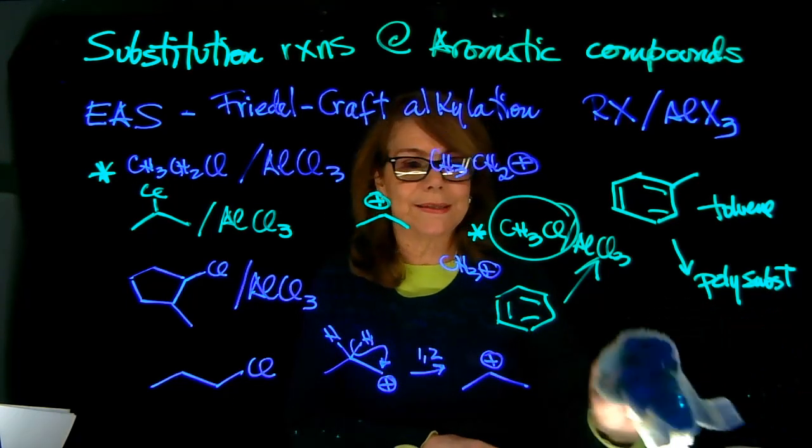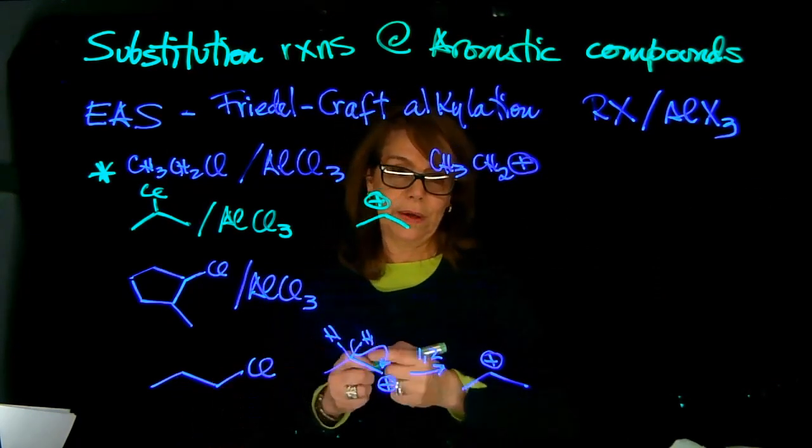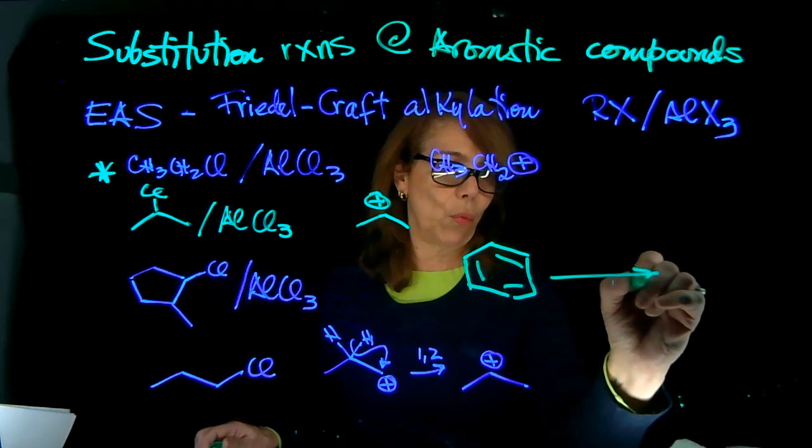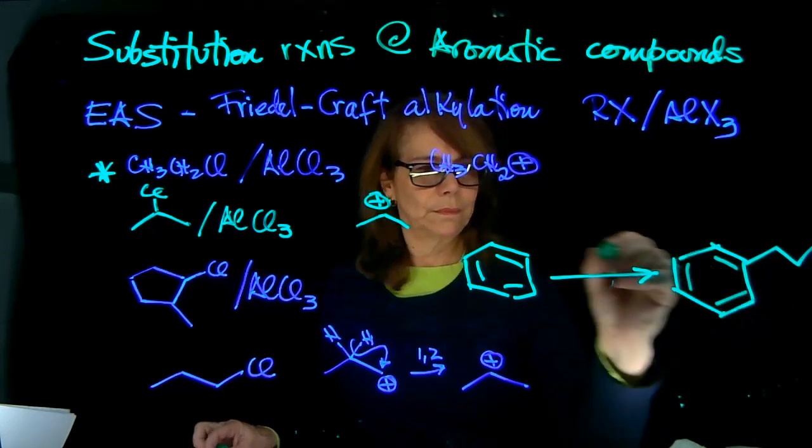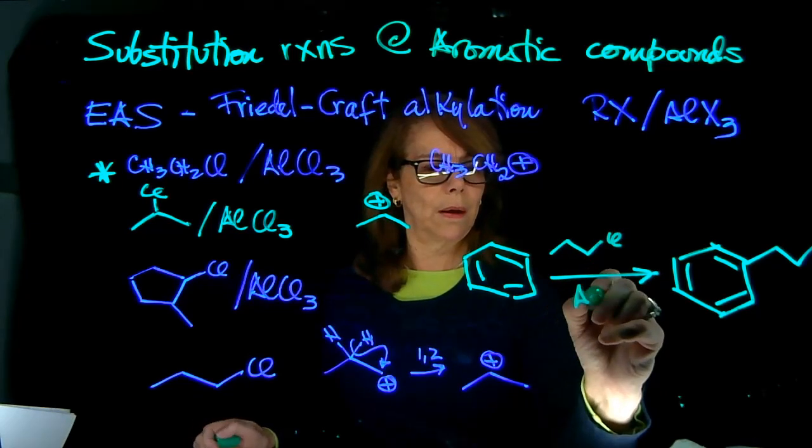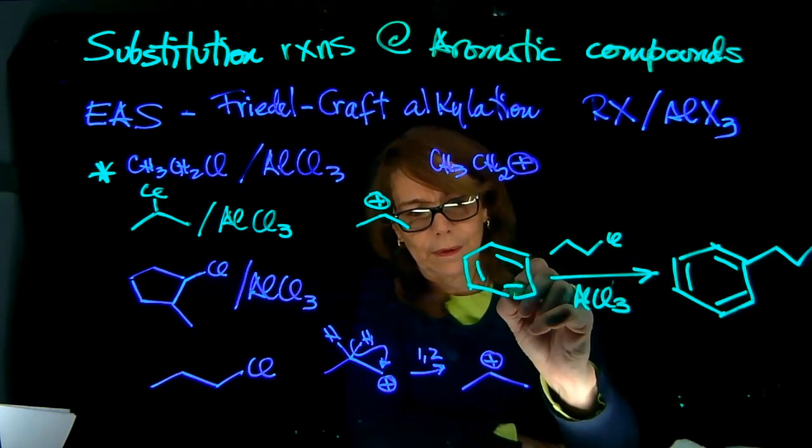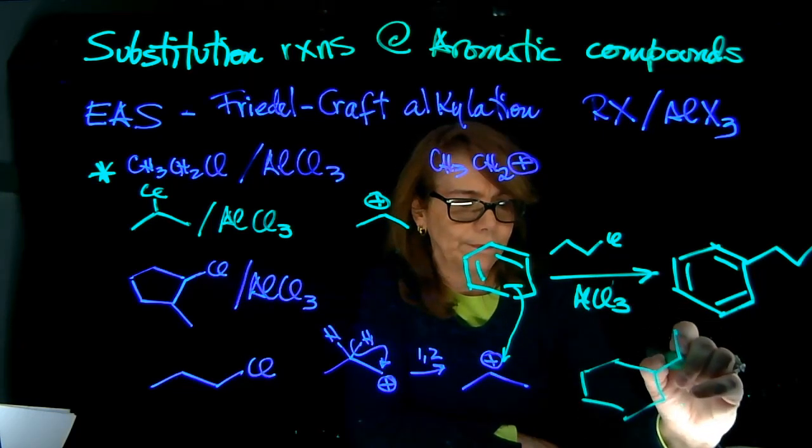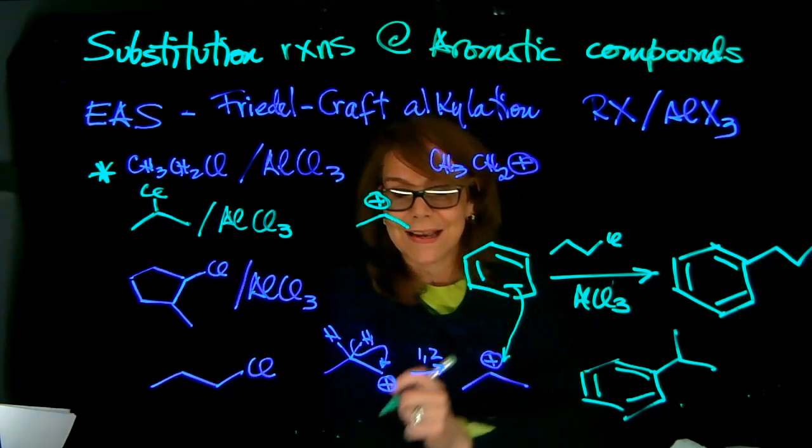So now, it complicates the picture, because say that I have benzene, and it's attacking my electrophile. If I wanted to make propyl benzene, and I attempt to do this, actually, that's not the major product. The major product is going to be the substitution isopropyl. And it happens because this carbocation rearranges to that.